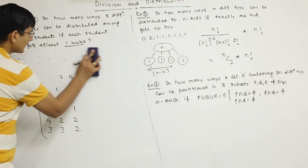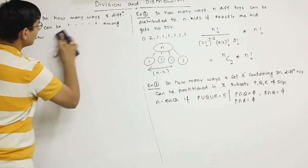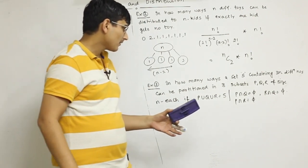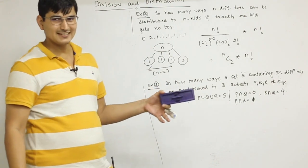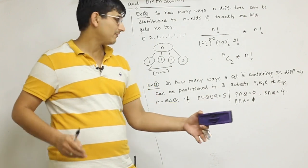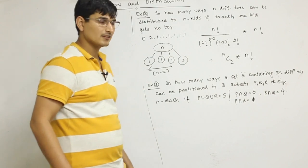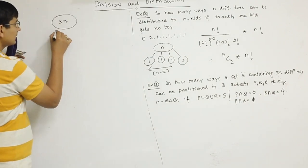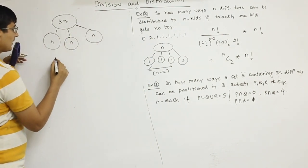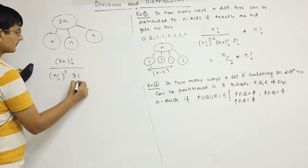Next question: In how many ways can you partition a set containing 3n different elements into 3 subsets which don't have anything in common, and all elements are distributed? That is as good as dividing 3n things into n, n, n - three groups. The answer is 3n factorial upon (n factorial) cubed divided by 3 factorial.